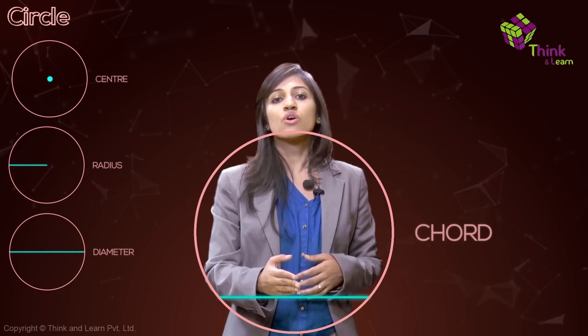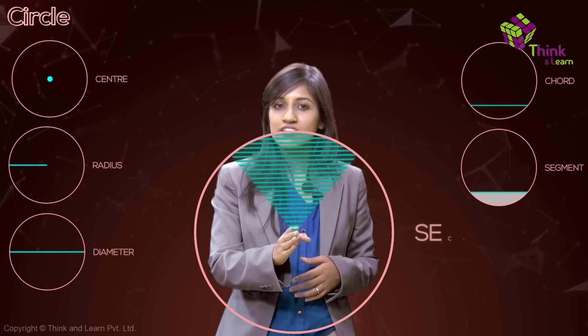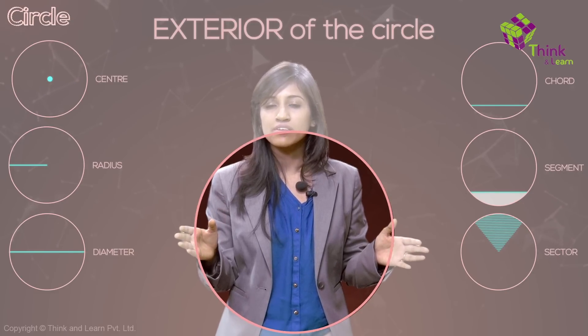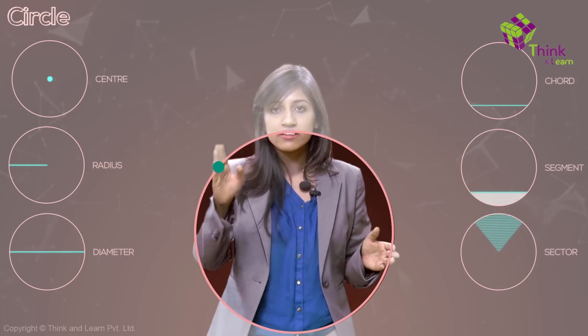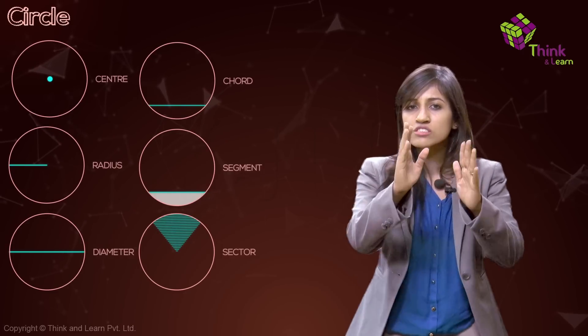Let's summarize everything. Here is a circle: this is the center, this is the radius, this length is the diameter, this is a chord, this region is a segment, this is a sector, whatever is outside the circle is the exterior, the inside is the interior, and this boundary is the circumference.